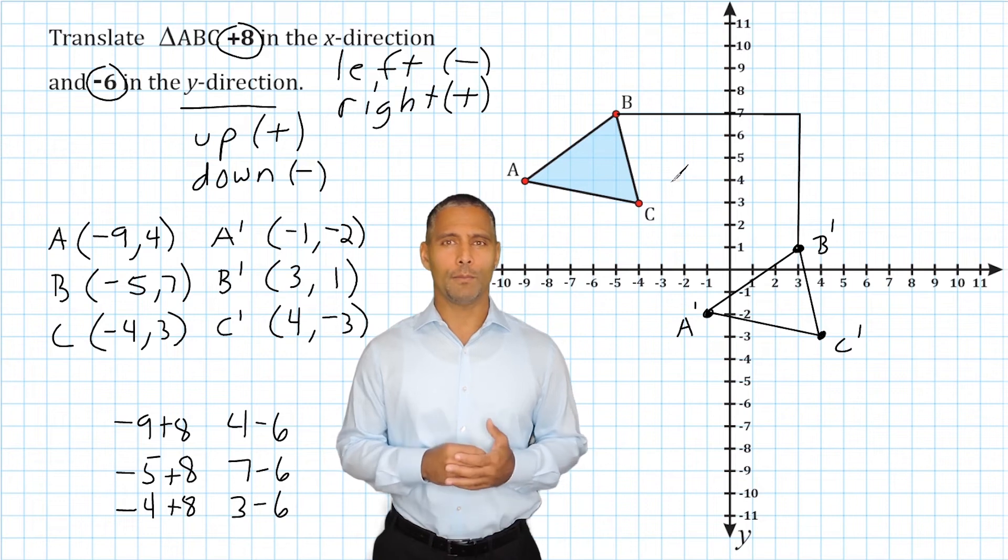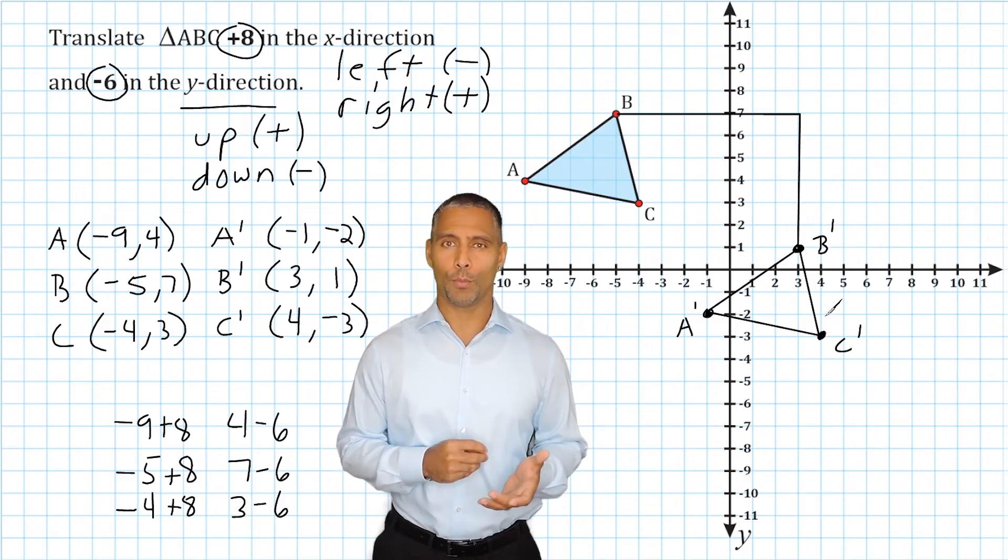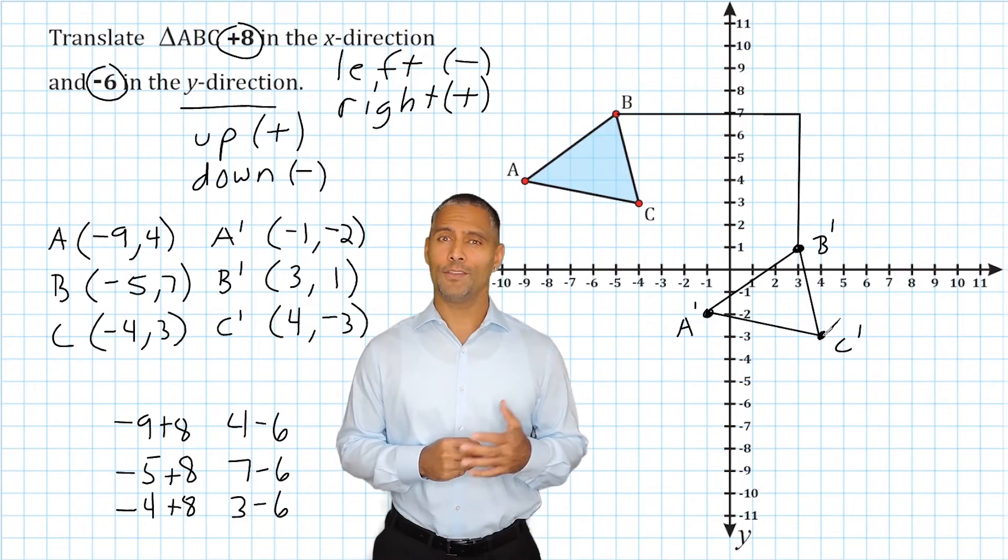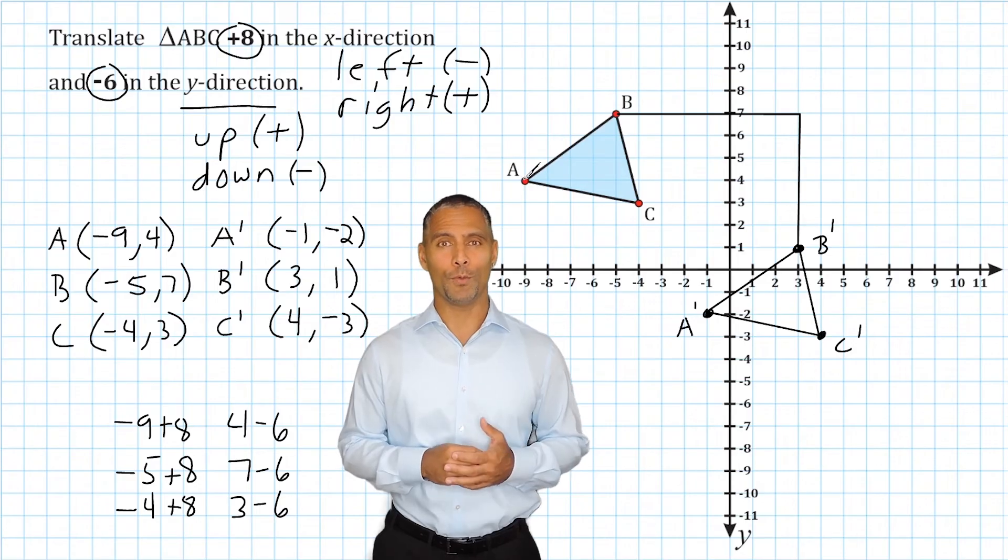If we check point C and move over a distance of positive 8 in the x-direction and down 6 in the y-direction, you can see that we would land on our transformed point C as well. And this is also the case with point A if we move 8 to the right and down 6 units.